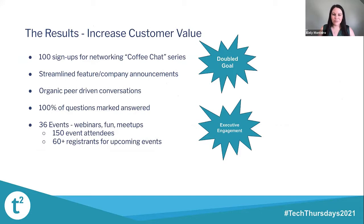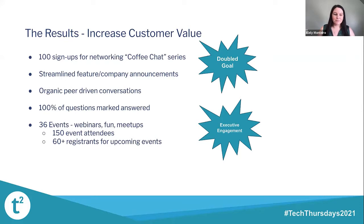Let's dive into some of the results we've seen in the seven or eight months we've been launched. First, we ran a networking campaign where customers could opt in, share a little about what they were looking to learn and areas of expertise. We called it the Coffee Chat Series and sent a Starbucks gift card to make it fun. We initially hoped to get 50 members, then once we got 100 we had to cap it. Previously, feature and product announcements were done through email or our CSMs — now the community is a major part of any rollout. Customers can interact with posts in the community where in email you really don't have that opportunity. We've seen a lot of peer-driven content — people are asking questions and it's so nice to see them answering each other's questions as well.